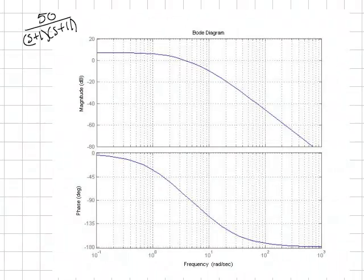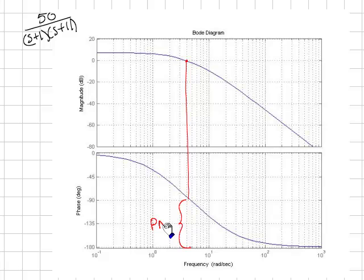Here's an example. I've taken the transfer function 50 over the quantity S plus 1, S plus 11, gone into MATLAB and got the Bode plot for this. And I want to know what is the gain and phase margin for the system. So for the phase margin, you look for where the system crosses 0 dB. It's right there. And you come down and you look for the distance right there. That's the phase margin.